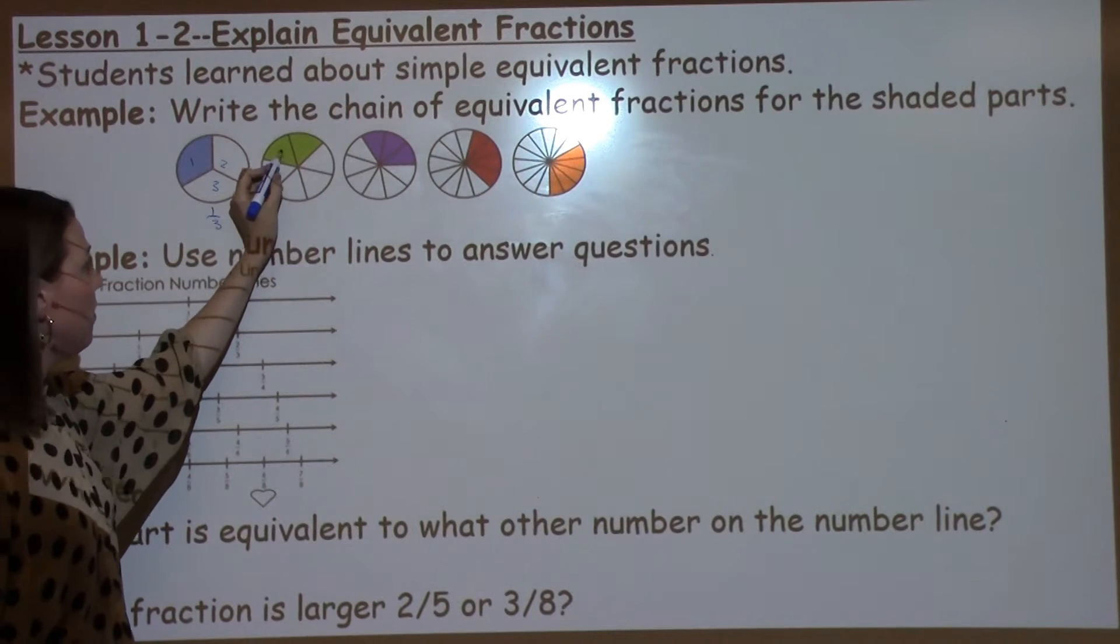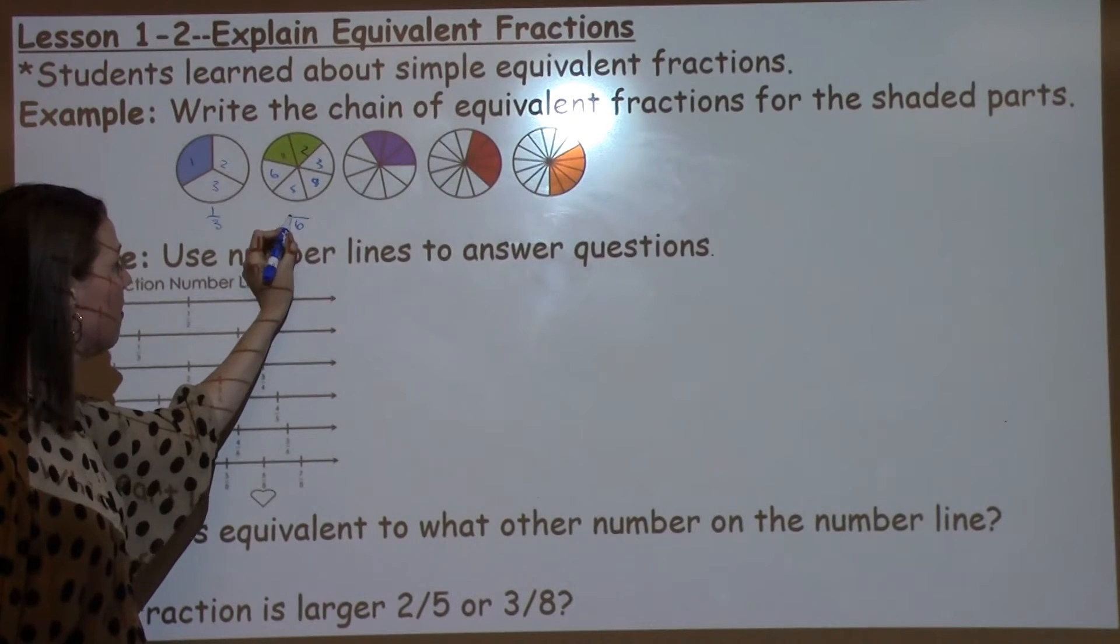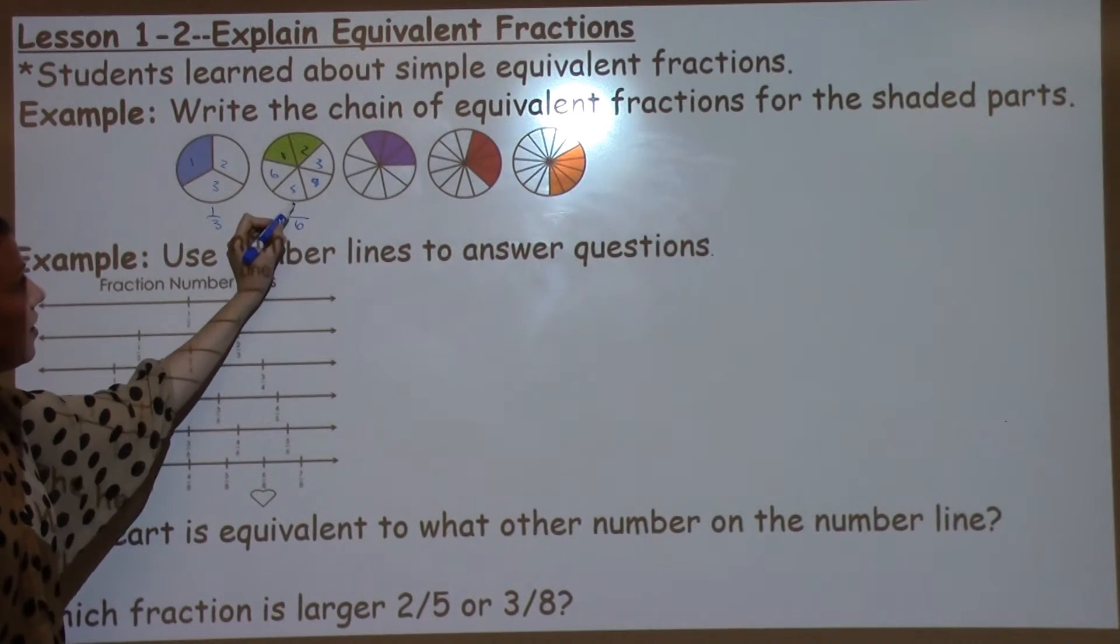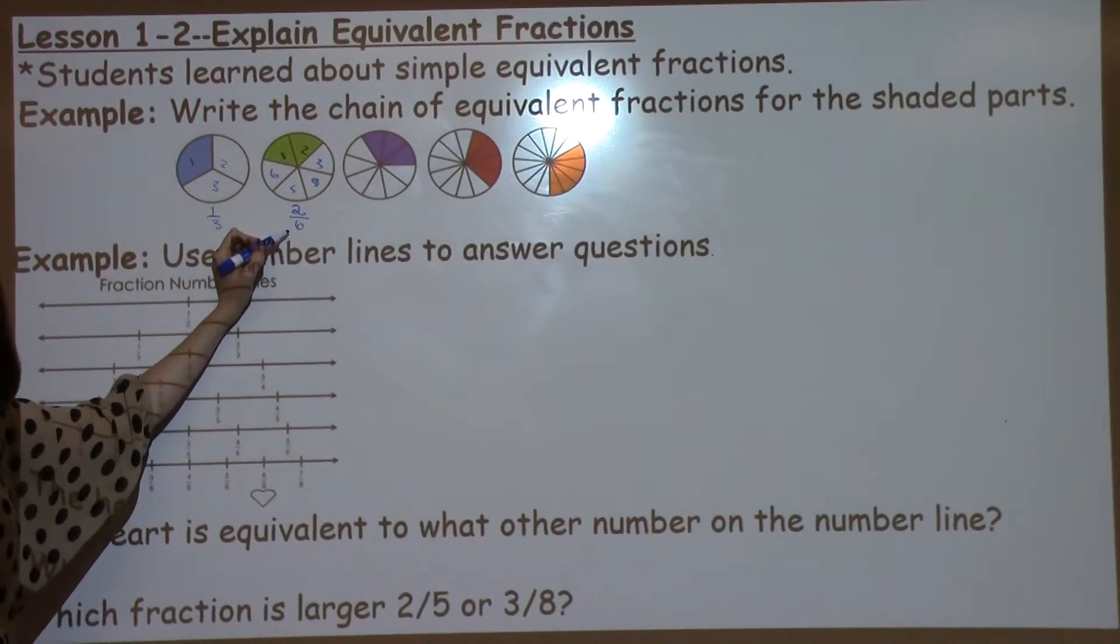Our next one, we've got 1, 2, 3, 4, 5, 6 pieces. So 6 is my denominator. My numerator, the shaded piece, is 2. So I know that 1 third and 2 sixths are equivalent fractions.